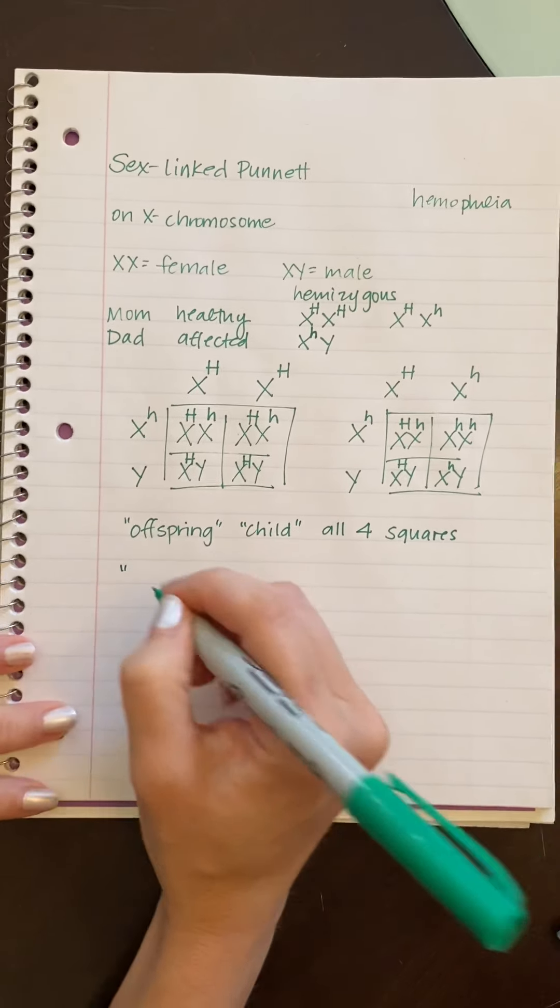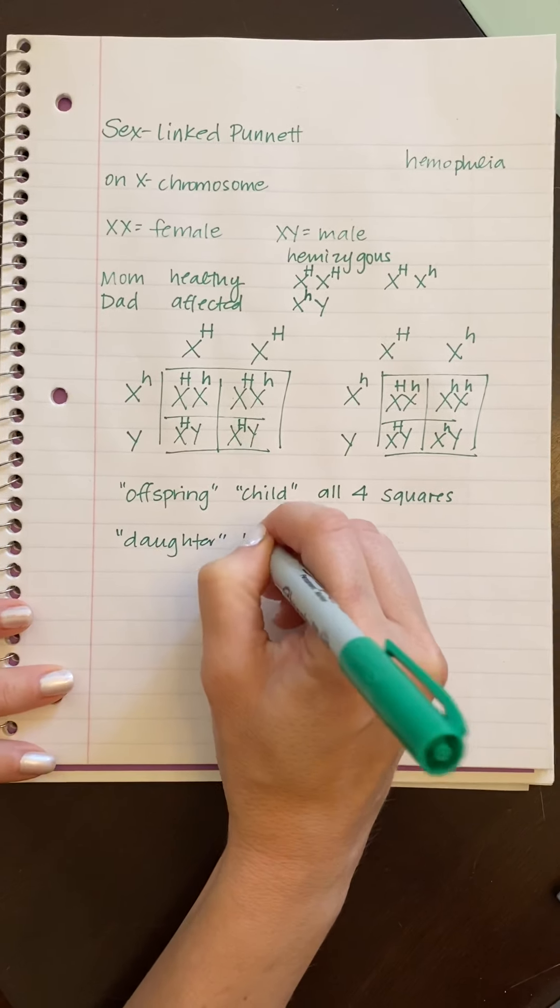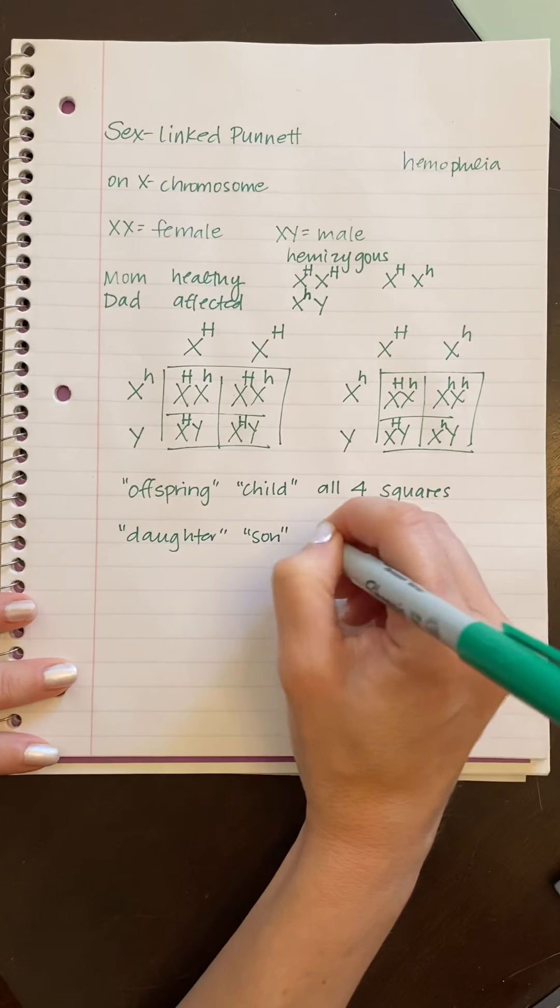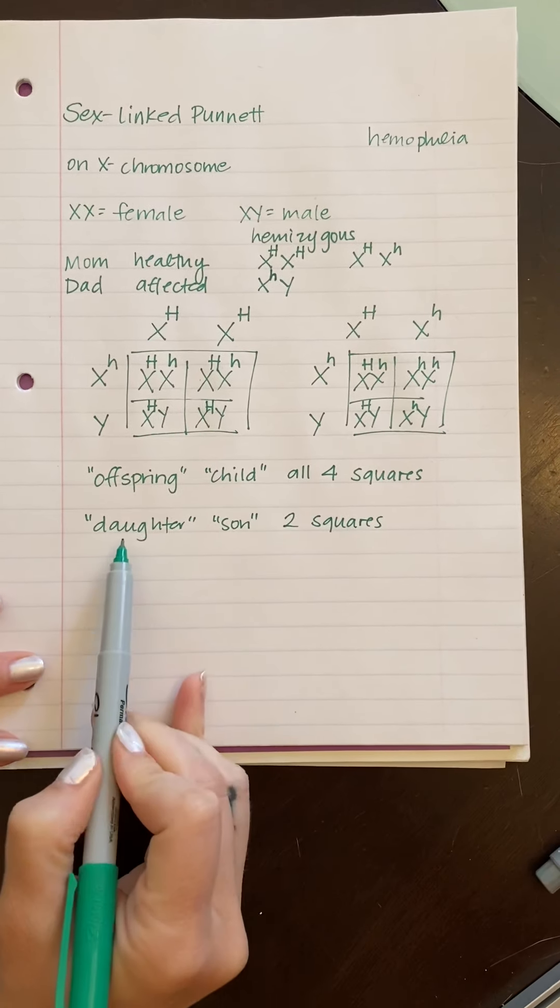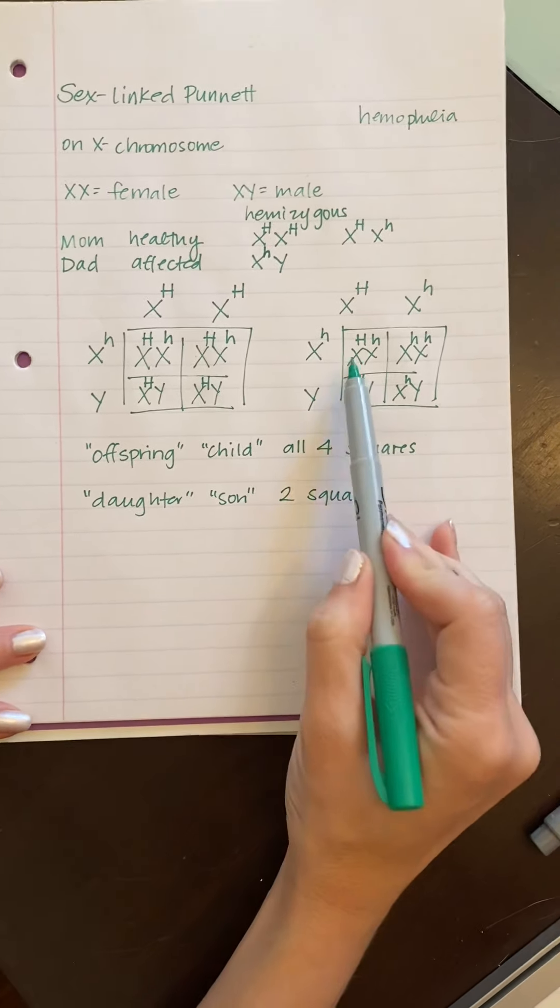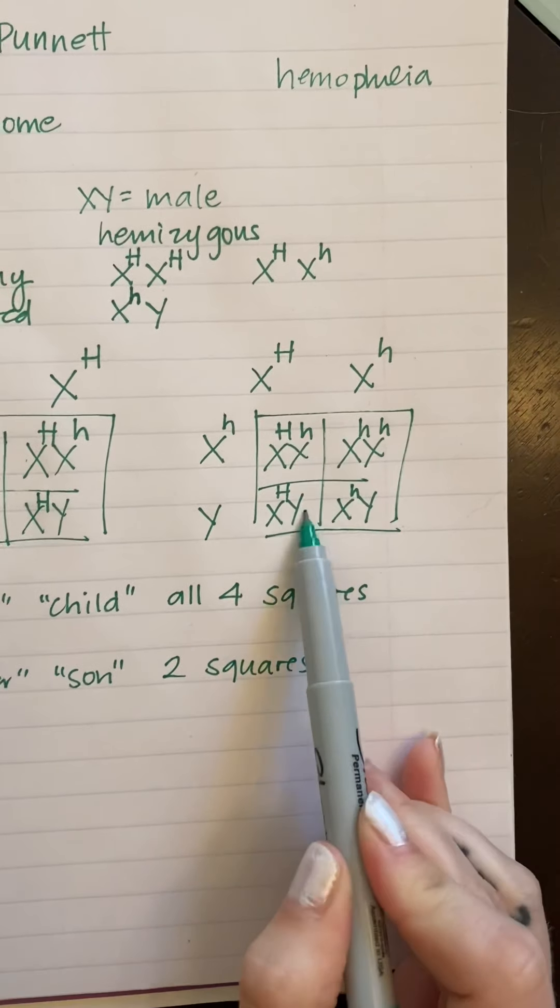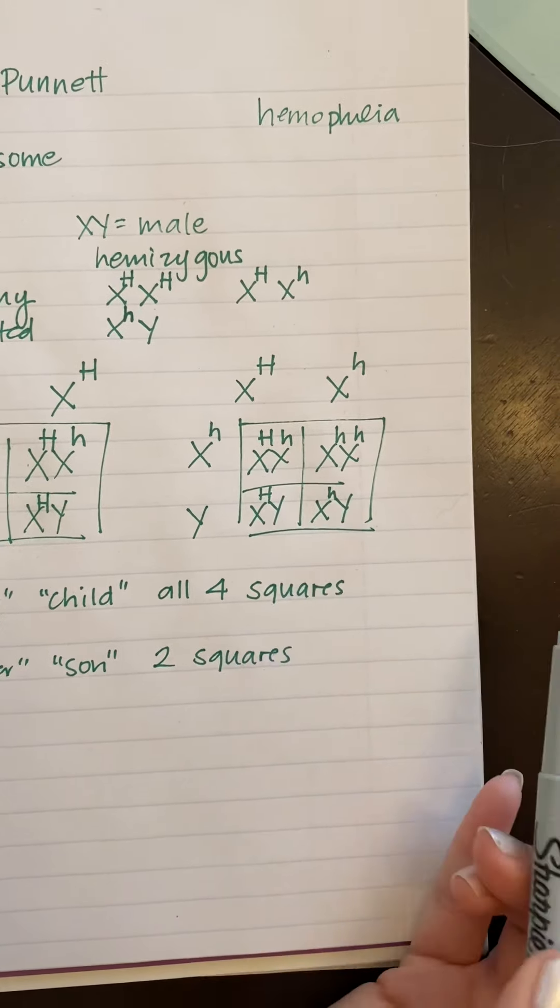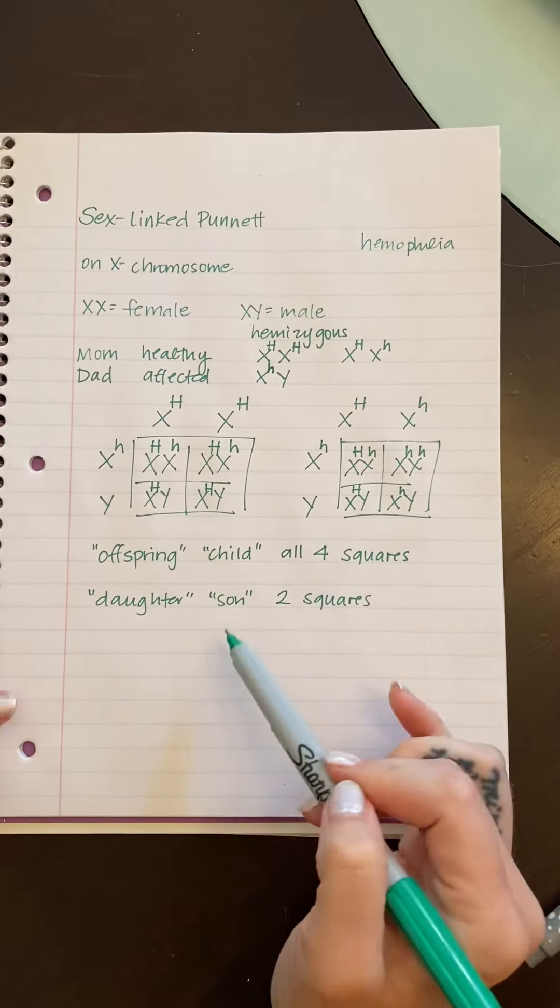If I say daughter or son, you're only going to look at the two squares that correlate with that sex. So daughter are two squares that are female. Son would be the two squares that are male. That will change your percentage. So please watch out for that.